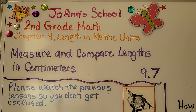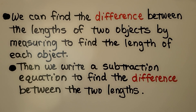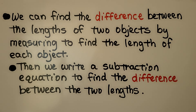Lesson 9.7: Measure and Compare Lengths in Centimeters. We can find the difference between the lengths of two objects by measuring to find the length of each object. Then we write a subtraction equation to find the difference between the two lengths.